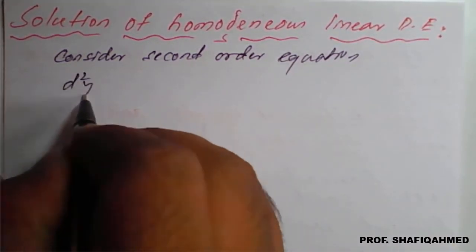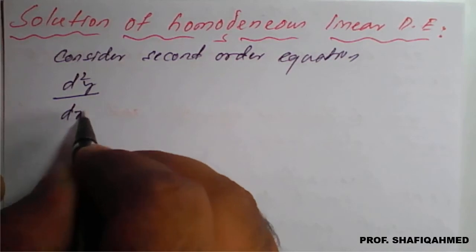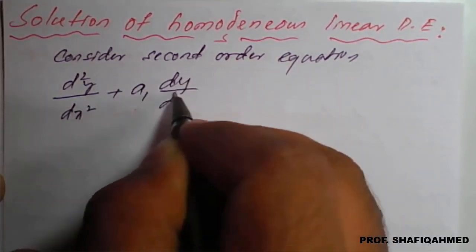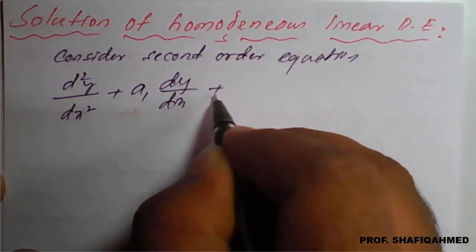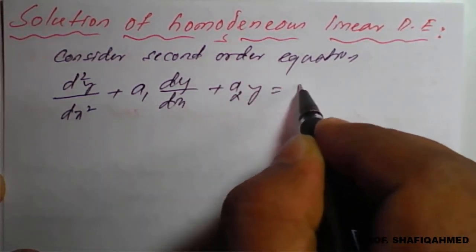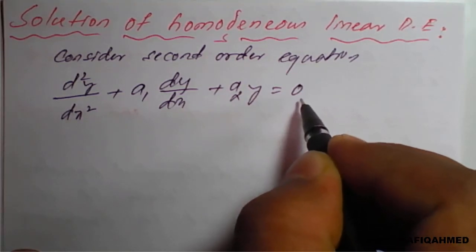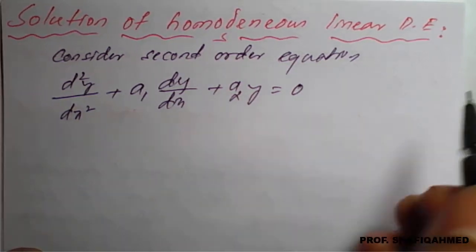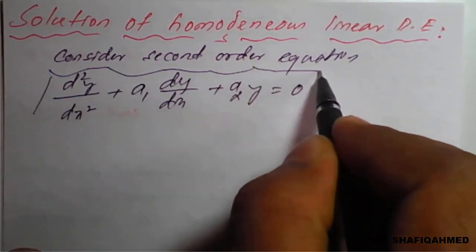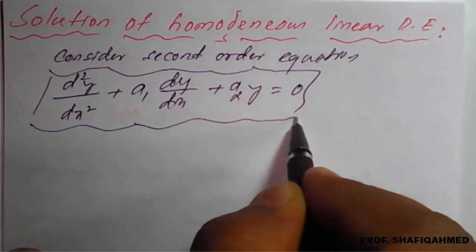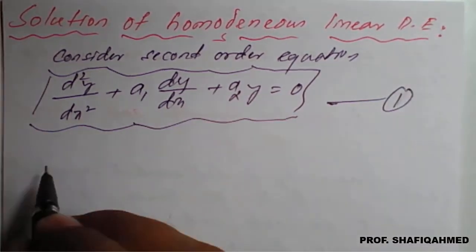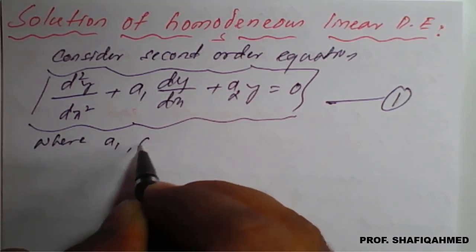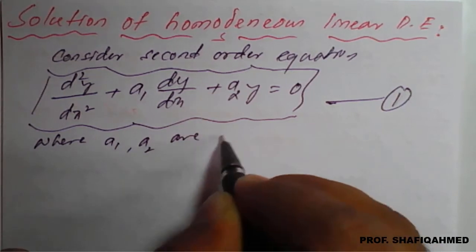That is d squared y upon dx squared plus a1 into dy by dx plus a2 into y equal to 0. Homogeneous means equal to 0. If non-homogeneous, equal to phi of x. So be careful. This is a differential equation of order 2 and it is homogeneous. I will give this equation number 1, where a1 and a2 are constants.